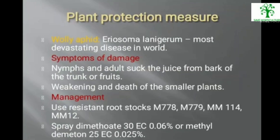For plant protection: Woolly aphid (Eriosoma lanigerum) is a most devastating pest. Nymphs and adults suck juice from the bark of the trunk or fruit, causing weakening and death of smaller plants. Management includes using resistant rootstocks M778, M779, MM114, MM112, and spraying dimethoate 30 EC 0.06% or methyl dimethoate 25 EC 0.025%.